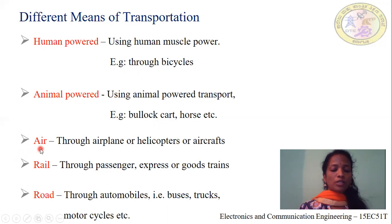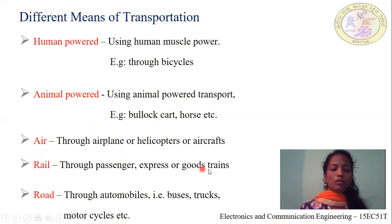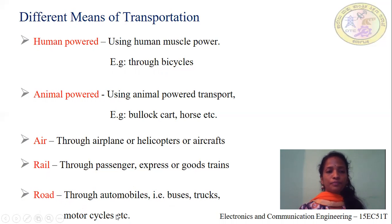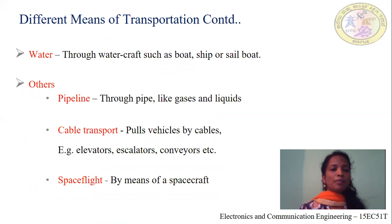The next means of transport is air transport, where we can transport people or goods through aeroplanes, helicopters or aircrafts. Then rail transport, where transportation of people or goods happens through passenger express or goods trains. The next means is road transport, where transportation happens through automobiles like buses, trucks, motorcycles, etc. The next means is water transport, where we transport people or goods through water crafts such as boats, ships or sailboats.